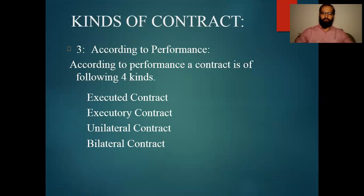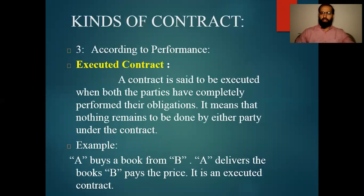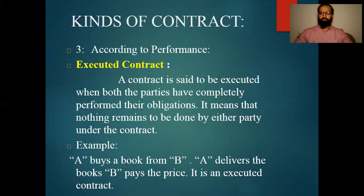According to performance, if we divide the contracts, we say: Executed Contract, Unilateral Contract, and Bilateral Contract. We can take another category with respect to the parties. Now let's see the Executed Contract. A contract is said to be executed when both the parties have completely performed their obligation. It means that nothing remains to be done by either party under the contract.